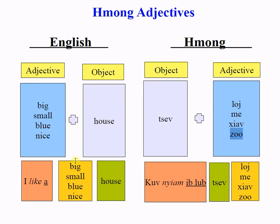Let's take a look at some sentence examples. 'I like a big house,' which translates into Hmong as: Gu, Nghia, E, Lu, J, log.